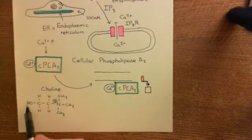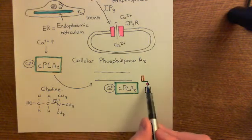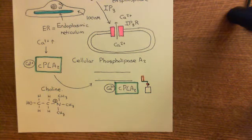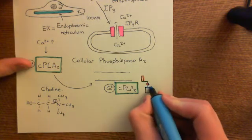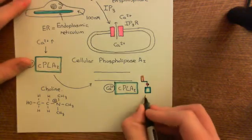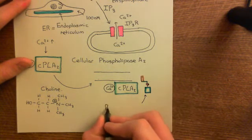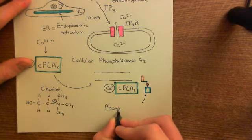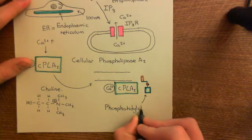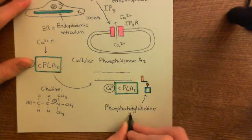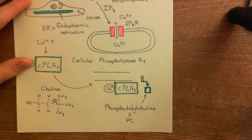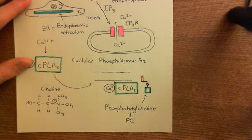You're going to form a phosphoester link between the free alcohol group of the phosphate group and this alcohol group on the choline molecule. That's how you attach choline to your phosphatidate. This is phosphatidylcholine, often abbreviated to PC, just like phosphatidylinositol-4,5-bisphosphate was abbreviated to PIP2.